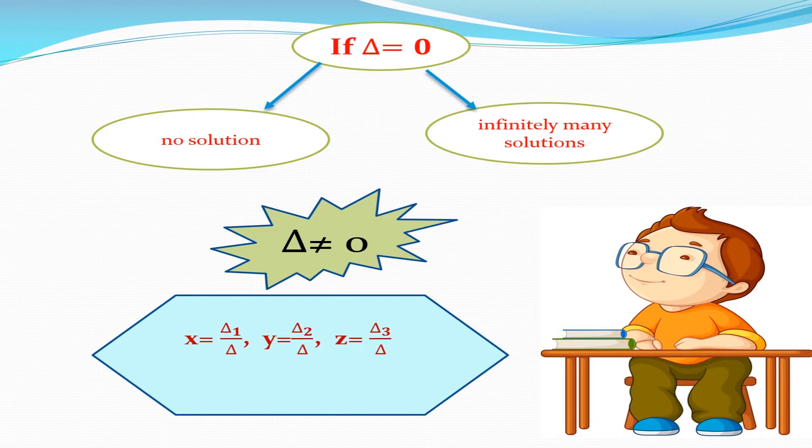If delta is not equal to 0, then unique solution is x is equal to delta 1 by delta, y is equal to delta 2 by delta, z is equal to delta 3 by delta.